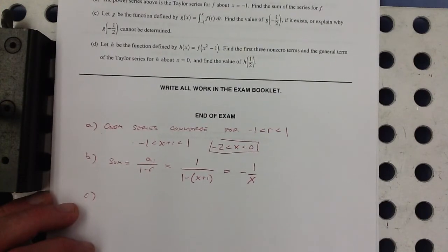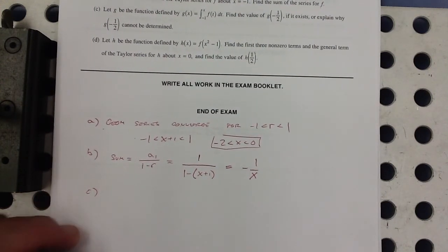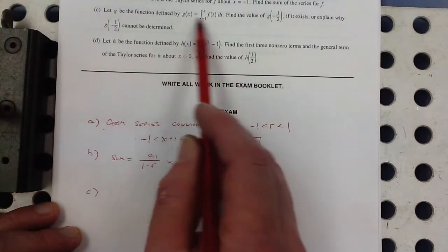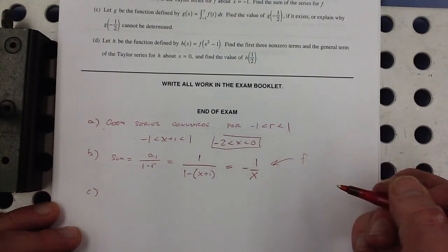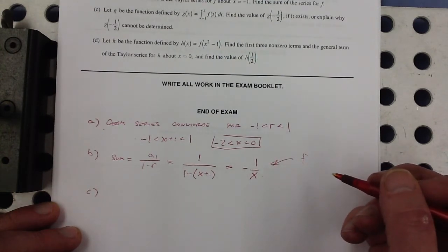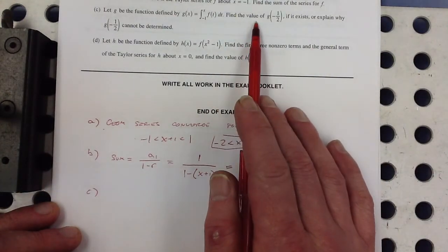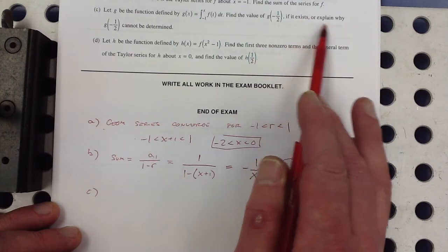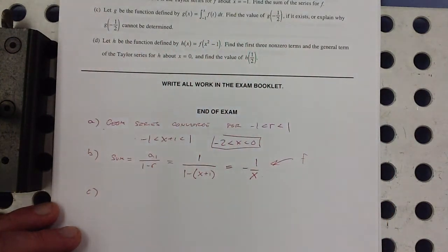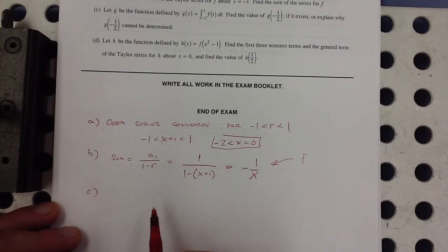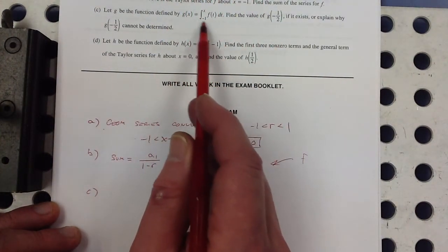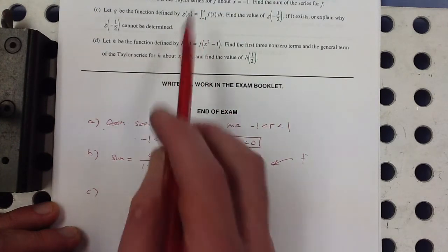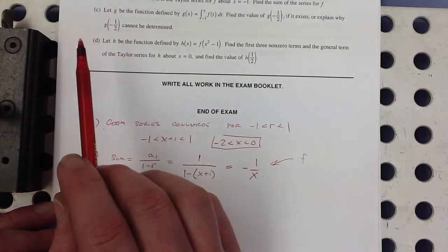Part C, let g be the function defined by the area under the f function, which now we know what it is. This is the f function, right? f equals negative 1 over x. They want us to find the value of g of negative 1 half if it exists or explain why g of negative 1 half cannot be determined. There's two ways of doing that.